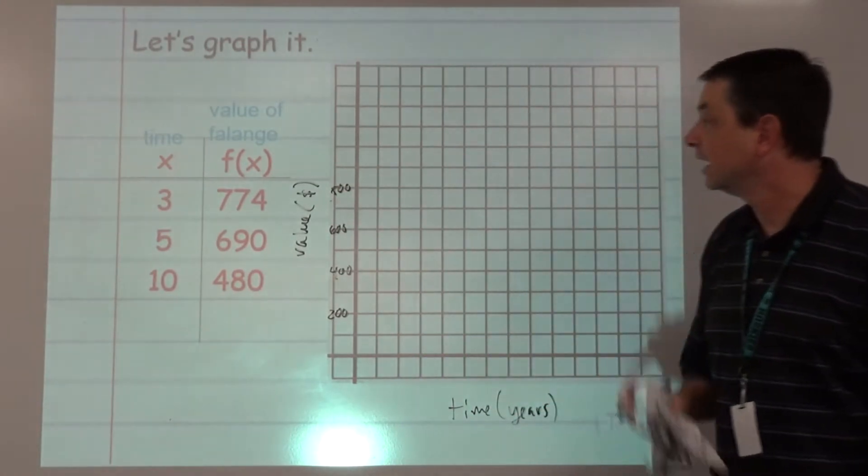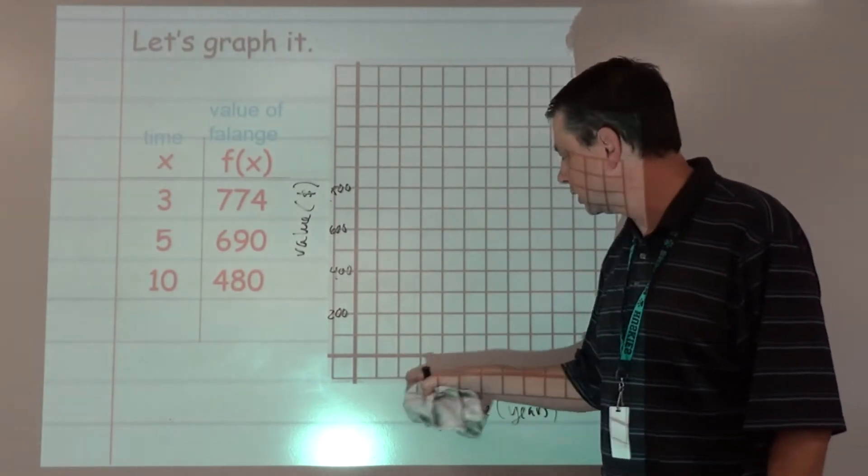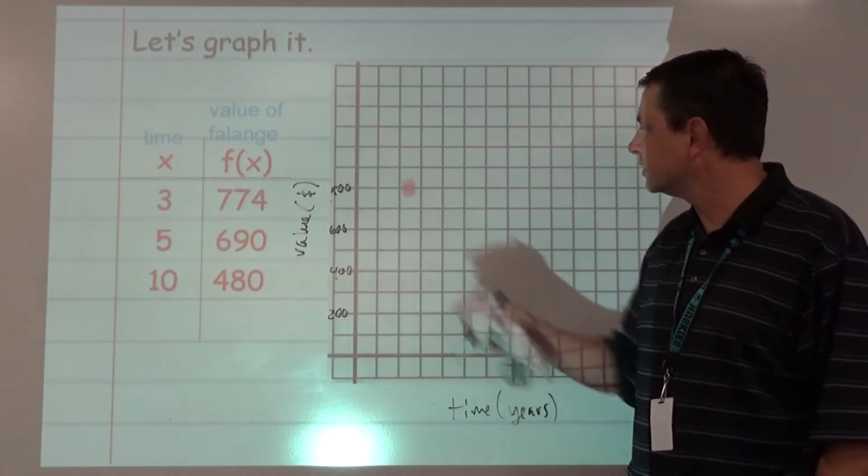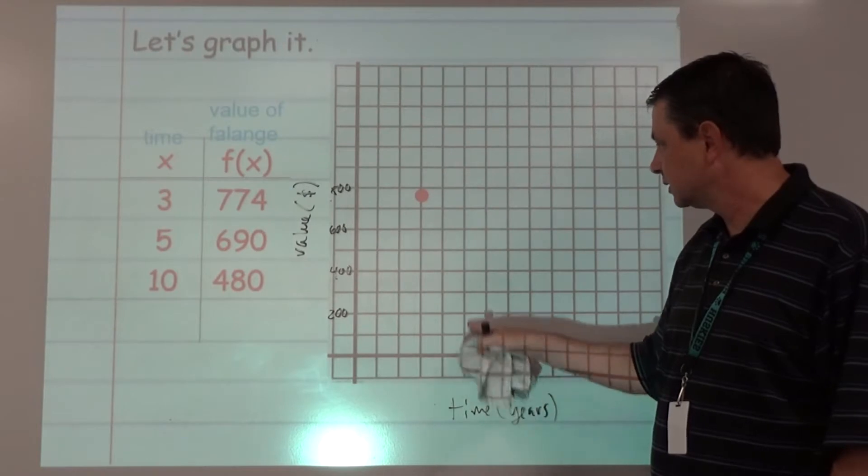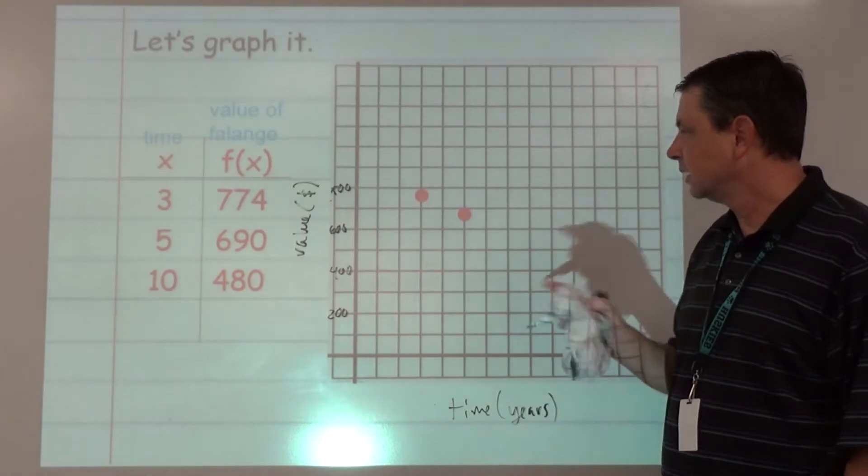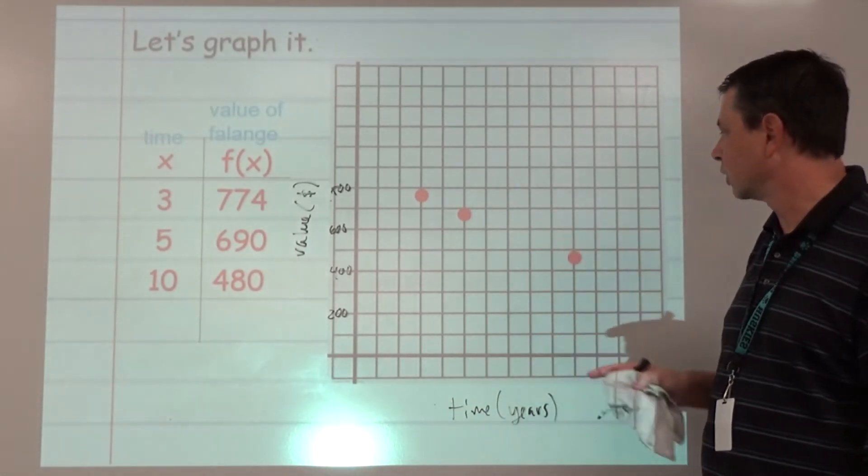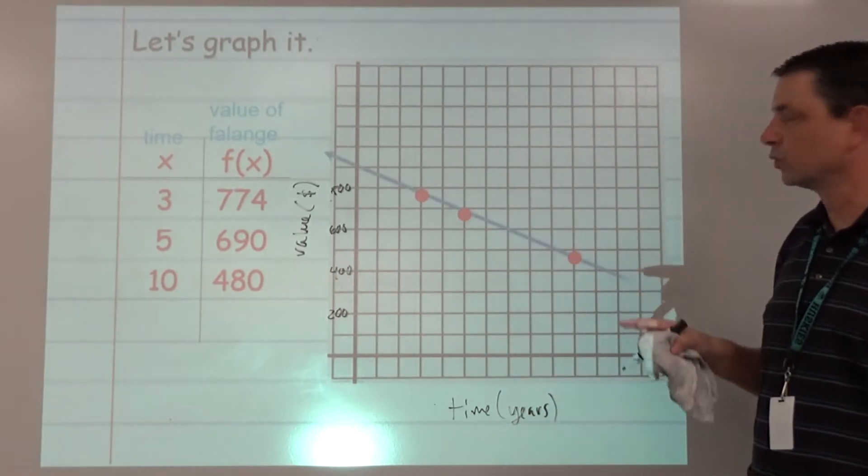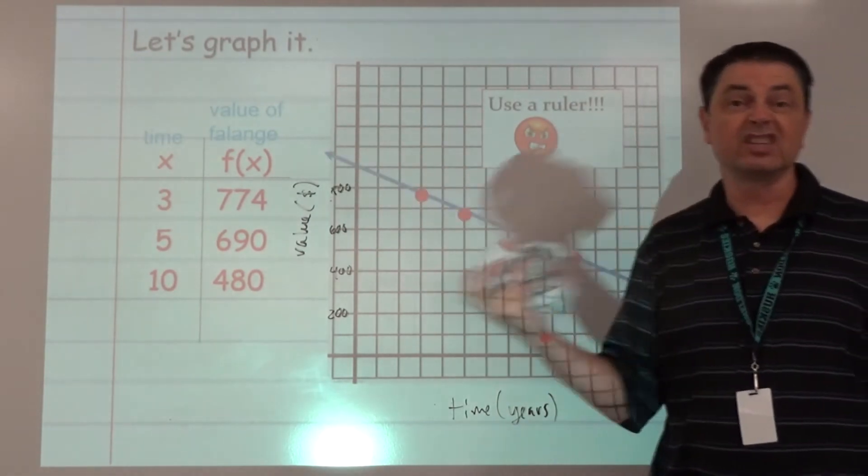Then we should be able to plot our points approximately. Three years, 774. Five years, 600 - there's 700, just a little bit lower there. And ten years, 480. Then you want to take a ruler and draw the line.